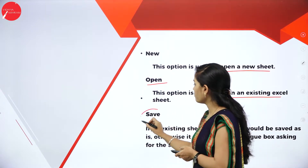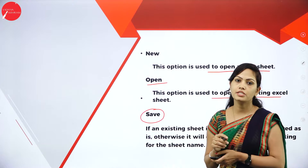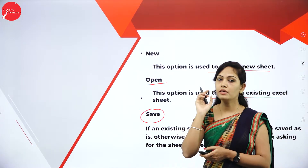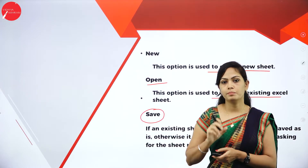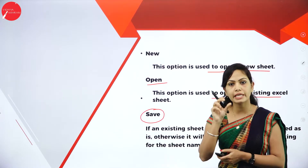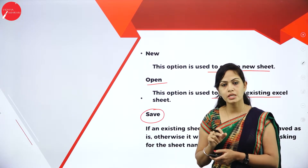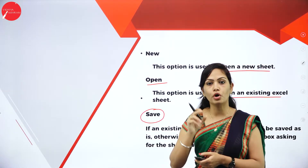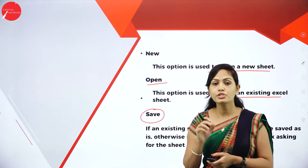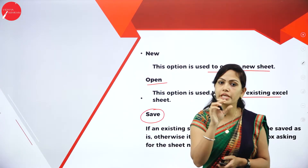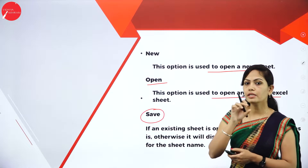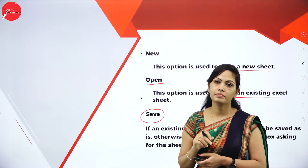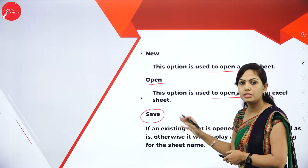How to save a file in Excel? Go to the File option and click on the Save button. When you click Save, you will get a dialog box where you need to choose where to save the file — whether it is on the desktop, documents, C drive, D drive, etc. First select where to save the document, then type the document name and click OK. Next, I will show this with a demo.